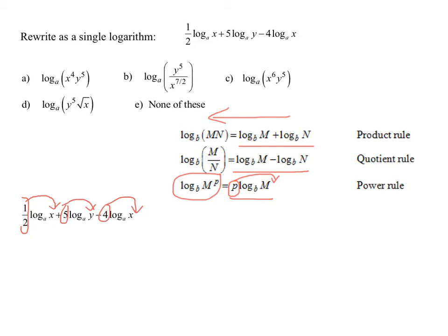Okay, so how am I going to rewrite this? It's going to be log to the base a of x to the 1 half power. Plus, remember the 5 is going up as an exponent, log to the base a of y to the 5th, minus log to the base a of x raised to the 4th power.